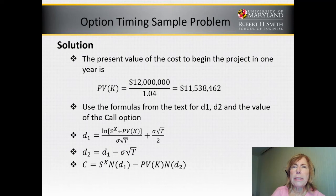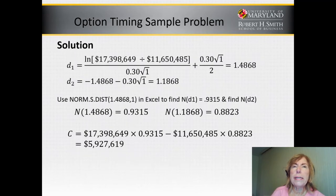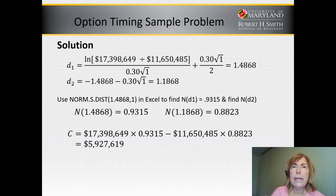We're going to use formulas from the text for D1 and D2, the normal distribution functions. The equations for D1 and D2 in the call are on slide 4. You use those formulas and put in the numbers. To get N of D1, you use a function in Excel called norm.s.dist. Start typing 'normal distribution' in Excel's function search and you'll see it as a possibility. Put in the D1 number of 1.4868, then enter 1 for the second argument. You'll find that N of D1 is 0.9315.